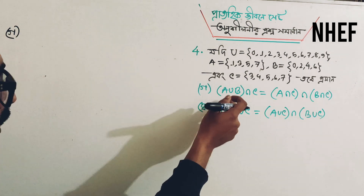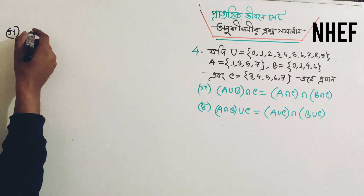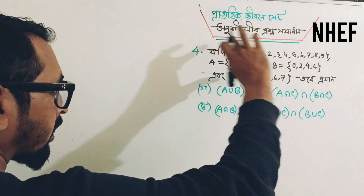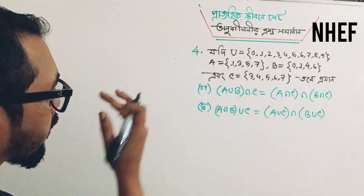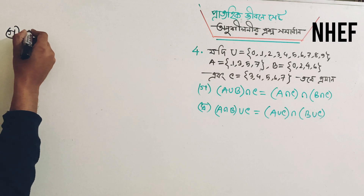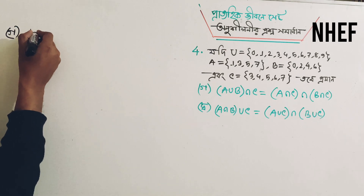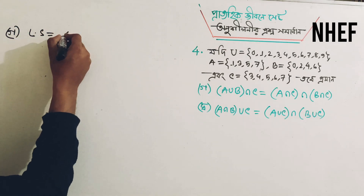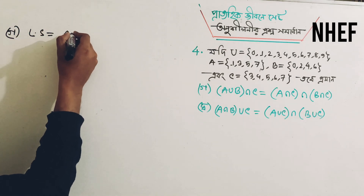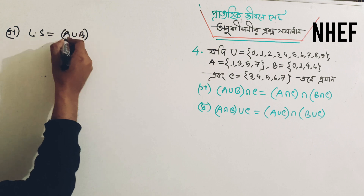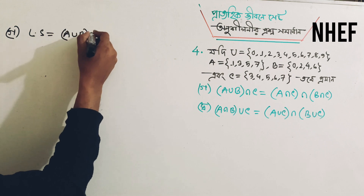We will write LS. If you want to read the letters, please read the letters. So we will start the LS. We will write A, B, C.